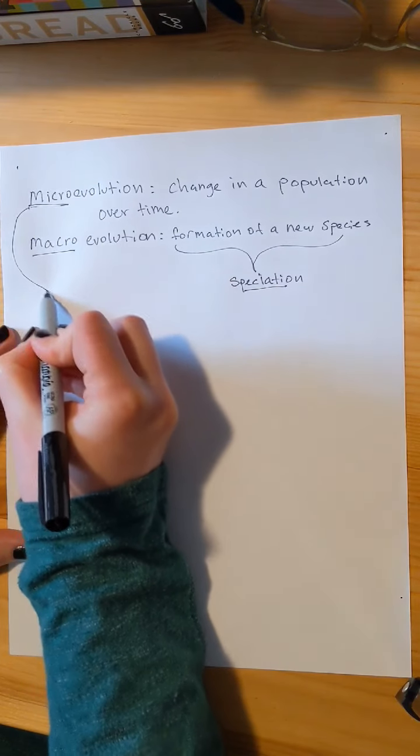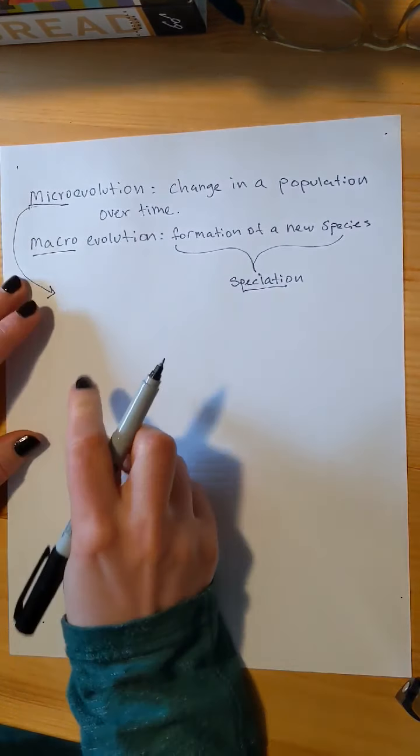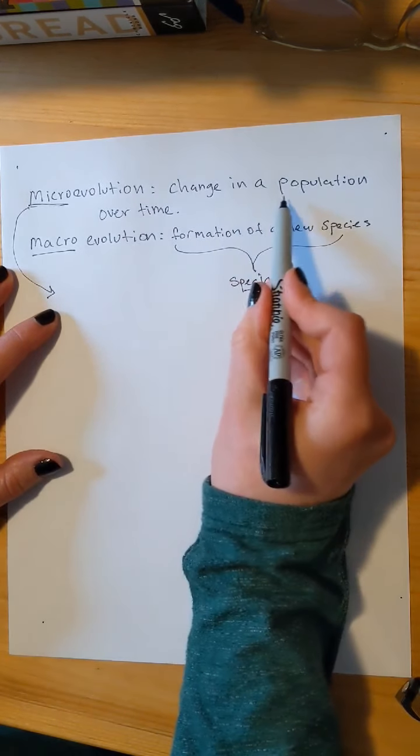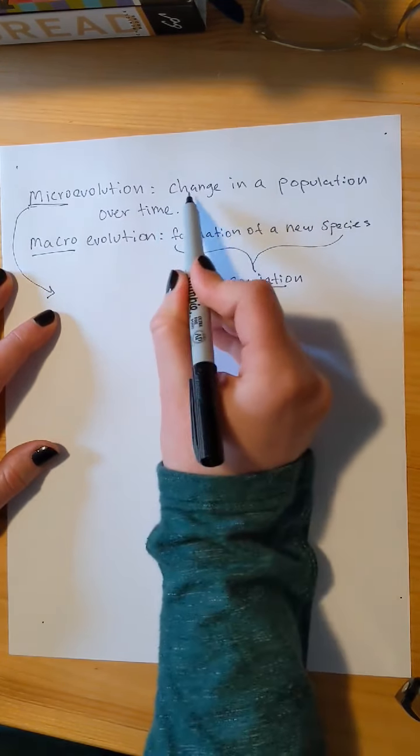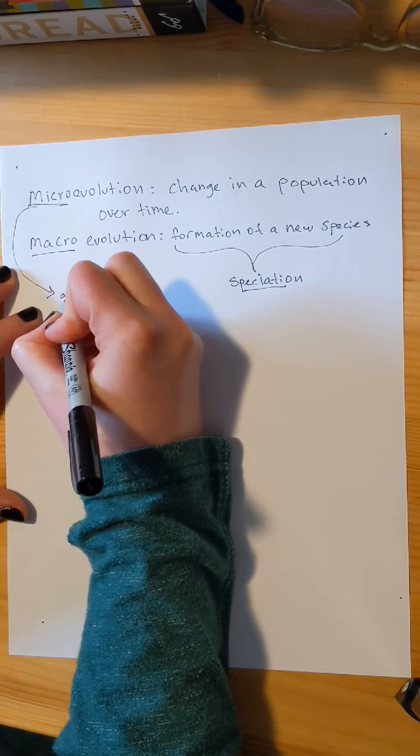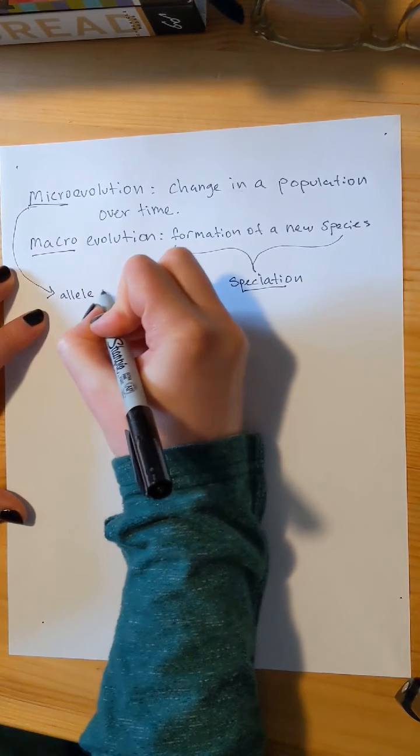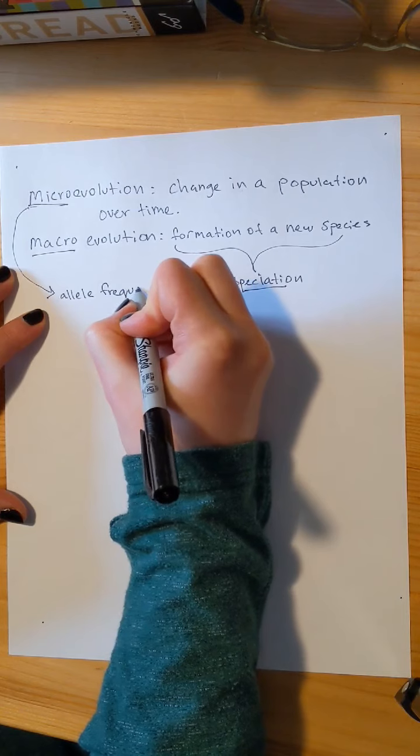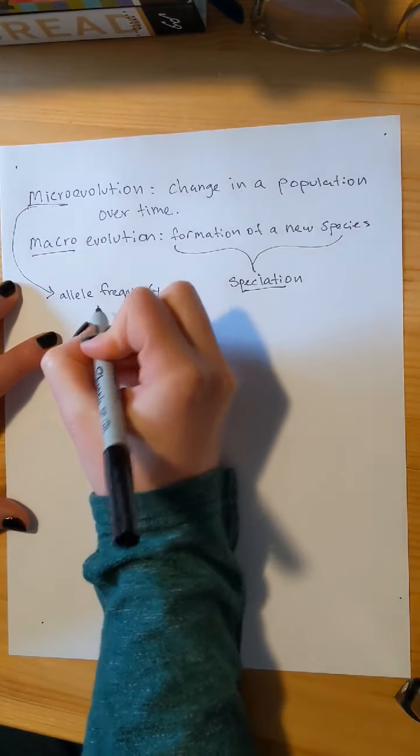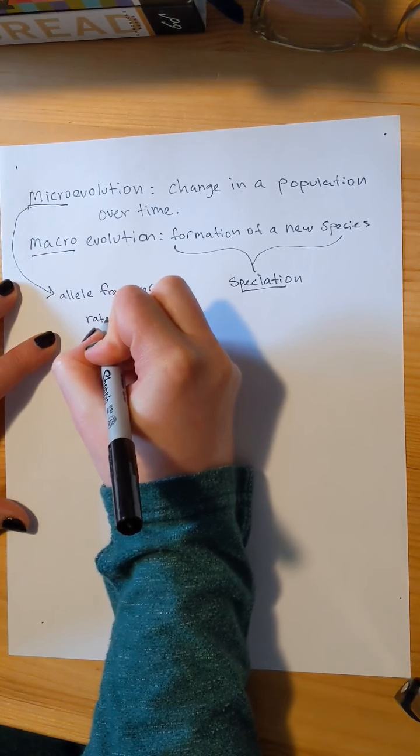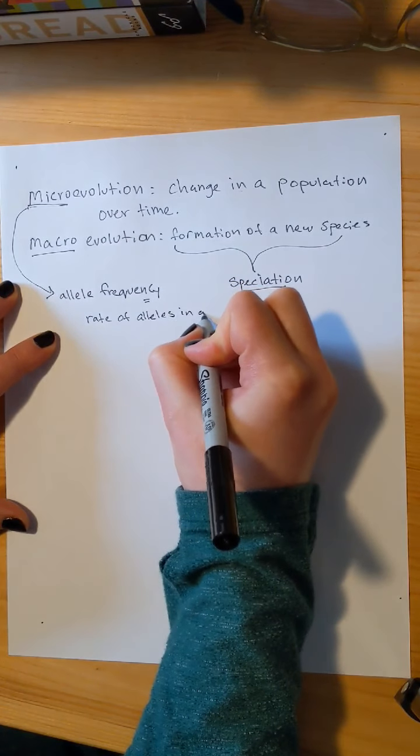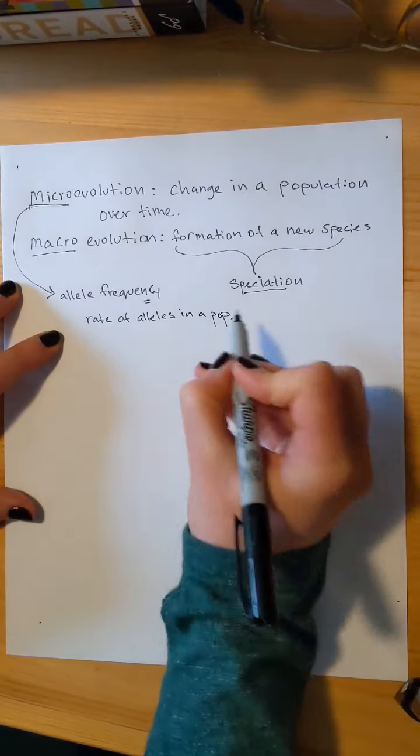Let's talk about microevolution first. Microevolution involves a change in a population over time. But what are we changing? What we're changing is the allele frequency.